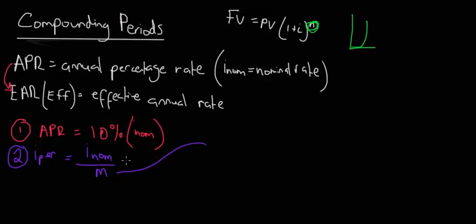Whoa! What's M? Okay, let's come over here. M is the number of compounding periods per year.